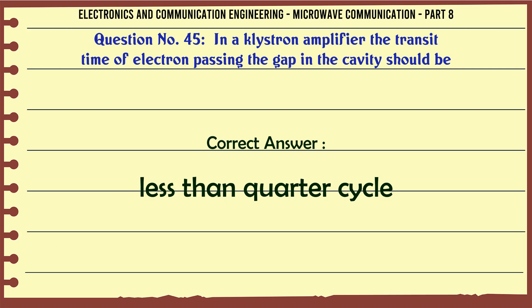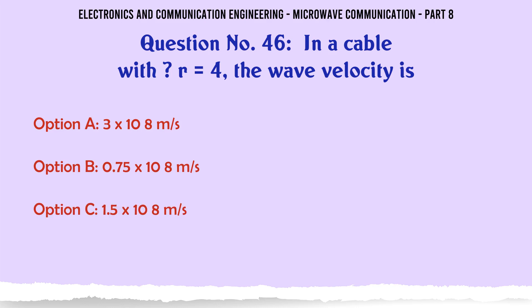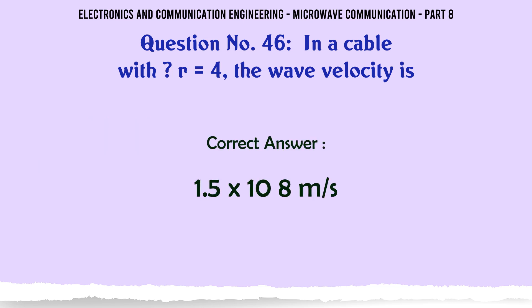In a cable with εr = 4, the wave velocity is — A. 3 × 10^8 m/s, B. 0.75 × 10^8 m/s, C. 1.5 × 10^8 m/s, D. 10^8 m/s. The correct answer is 1.5 × 10^8 m/s.